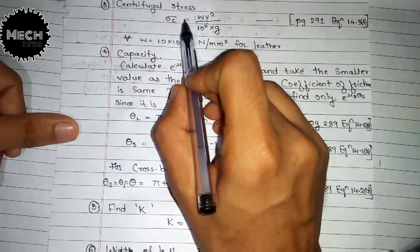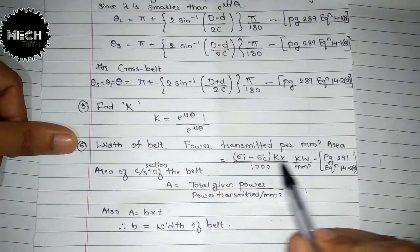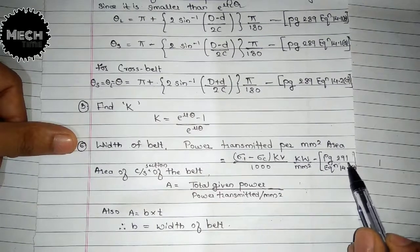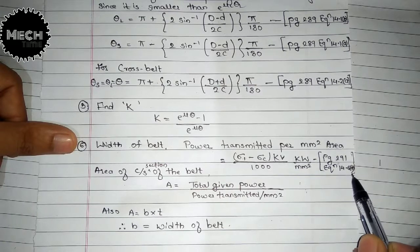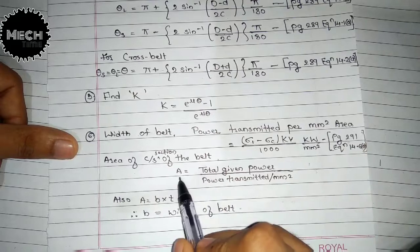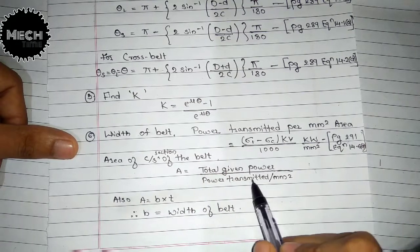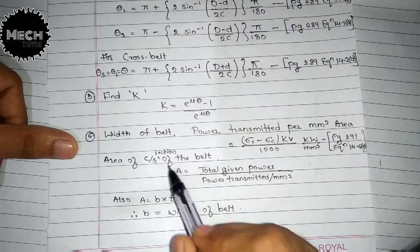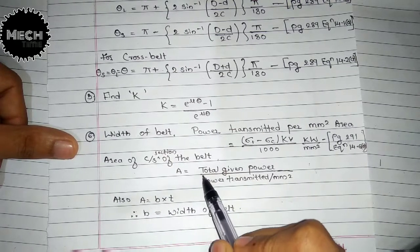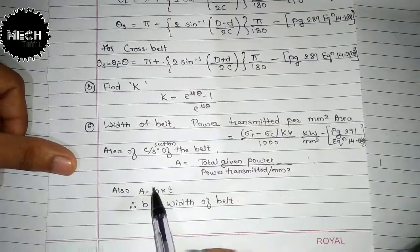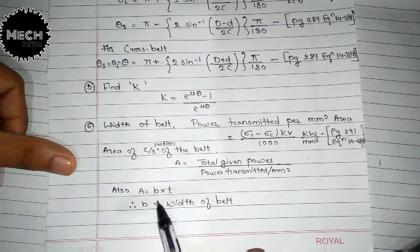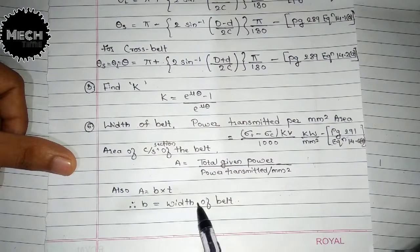You know σ₁ from the problem and σc from the centrifugal stress calculation, so you can compute power transmitted per mm² area. Then the cross-sectional area A = total given power / power transmitted per mm². Since A = b × t, and thickness t is known, the belt width b can be found.